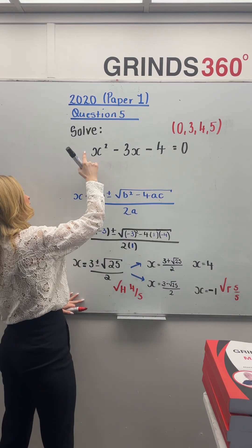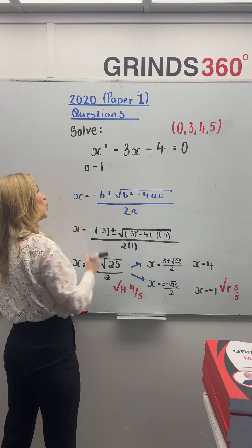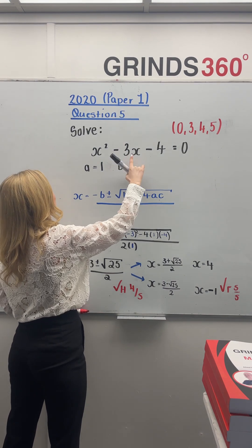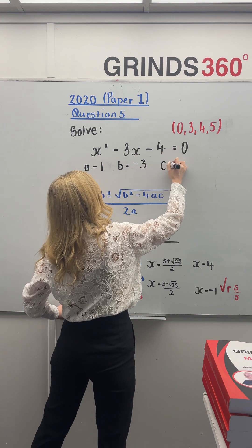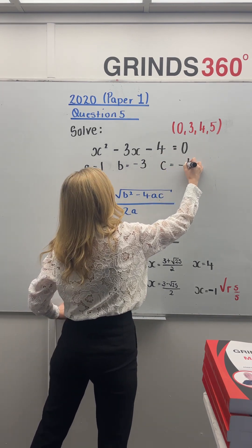A is the number in front of the x squared. That's one. B is the number sitting in front of the x and that's minus three. And C is the constant at the end. That's minus four.